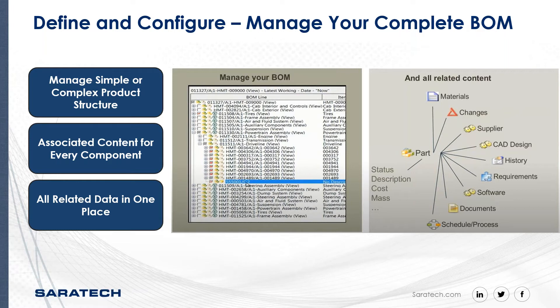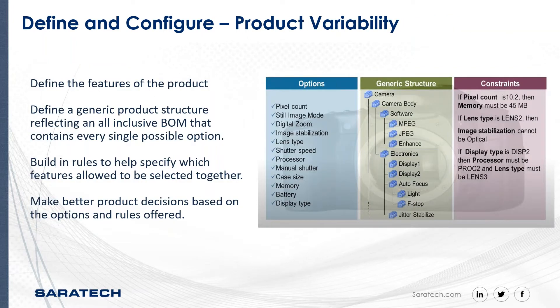We find the best way to deliver new product offerings and derivatives from a single platform. Common product structure and technology is an automated process. You can define the features of the product that you wish to offer to your customers. In this example we have a list of possible camera options.